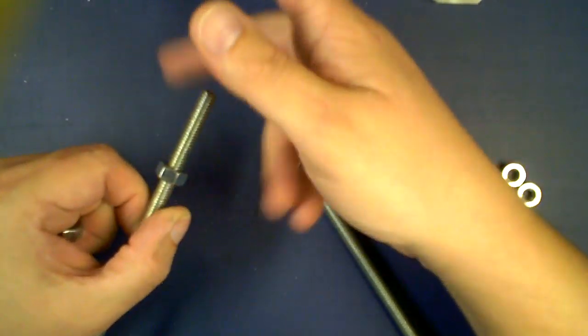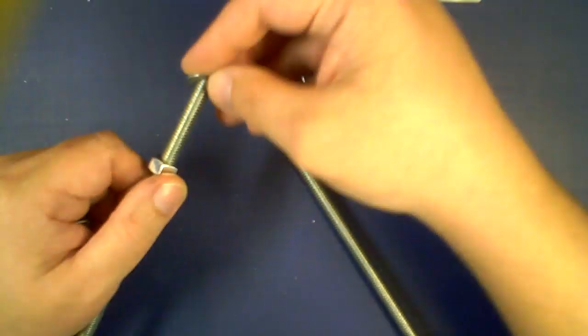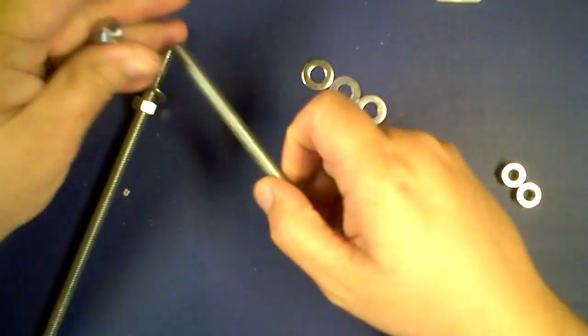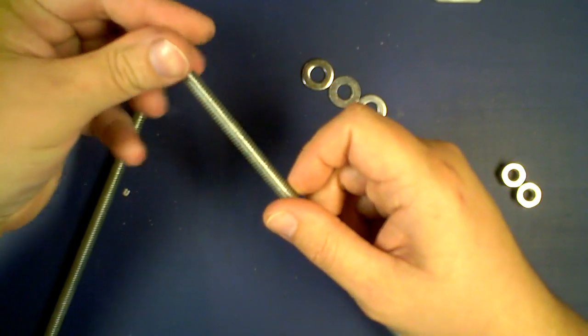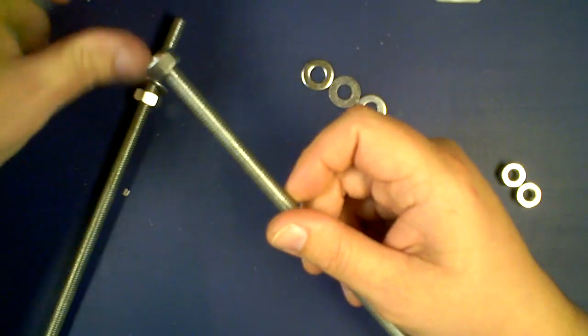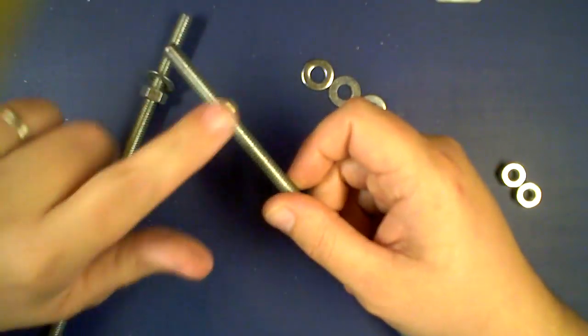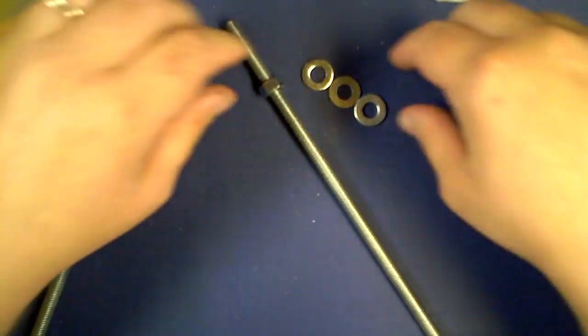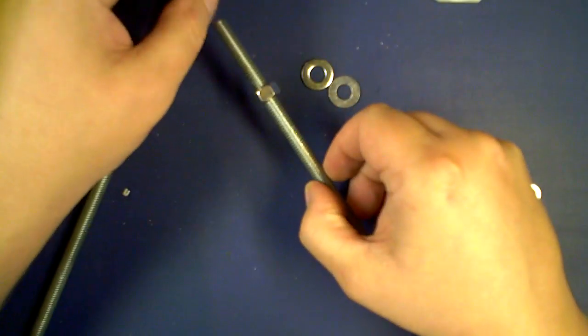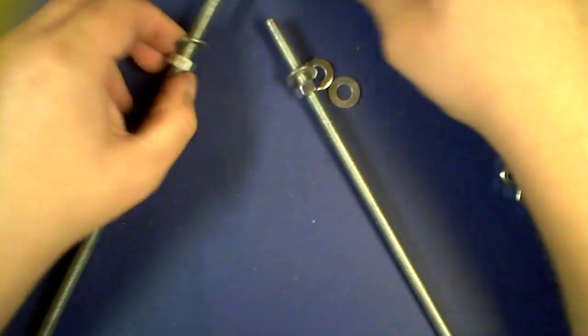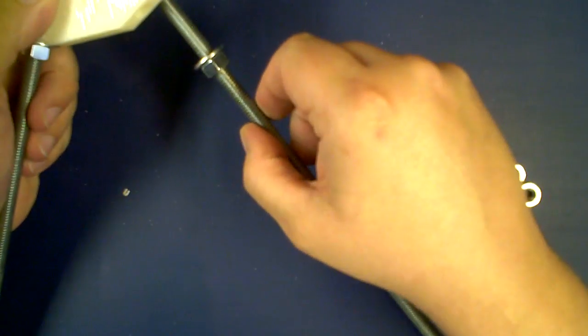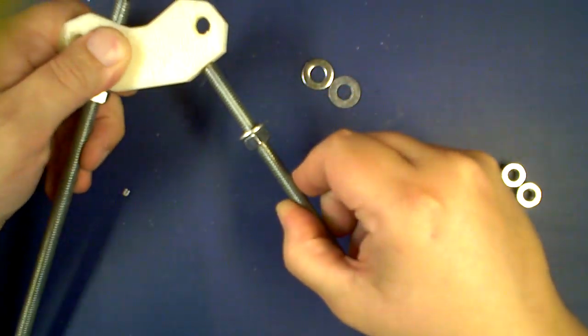Now, once you get done putting this together, you will then need to repeat the process identically for the other side. There is no difference between the left and the right on this one, mostly because we don't have all those Z parts that were side specific like before.